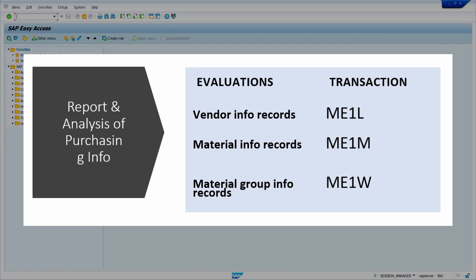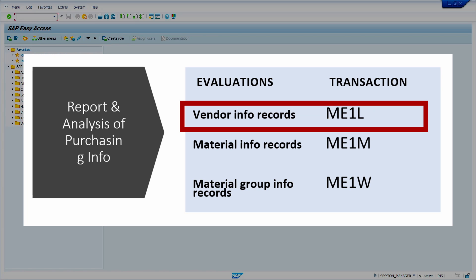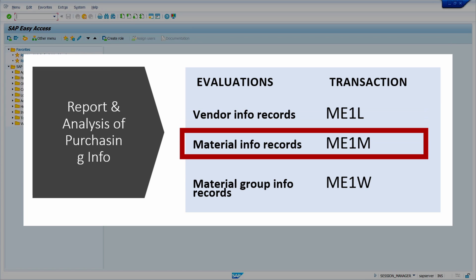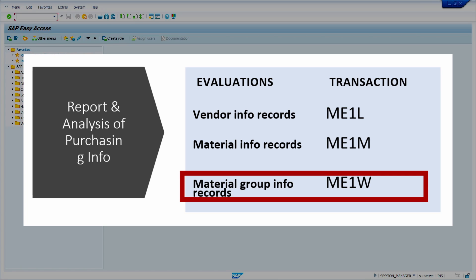Report and analysis of purchasing info records. We can use the following transaction codes for reporting and analysis. To view purchasing info records according to vendor, we can use transaction code ME1L. According to material, we can use transaction code ME1M. According to material group, we can use transaction code ME1W.